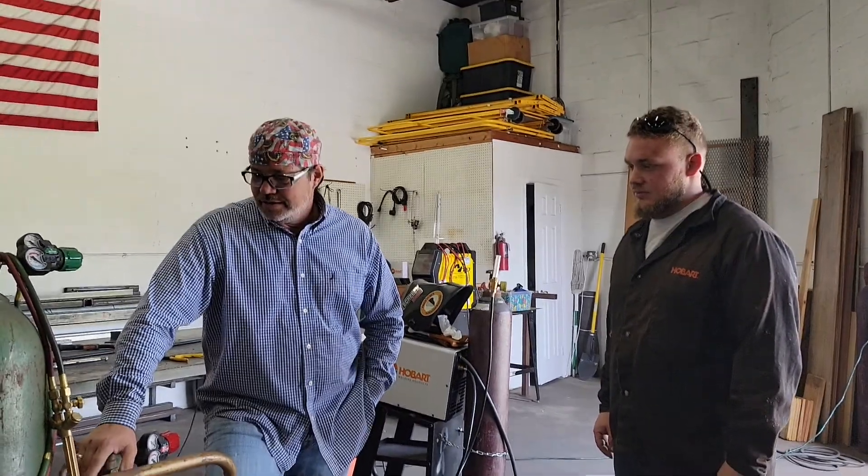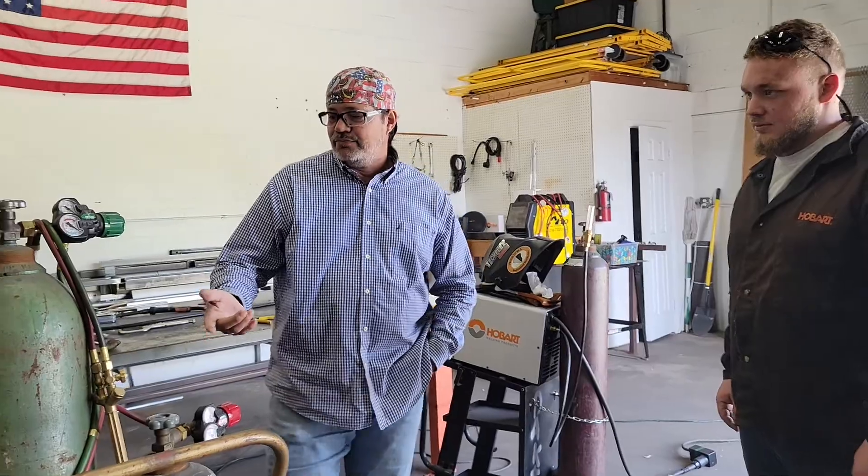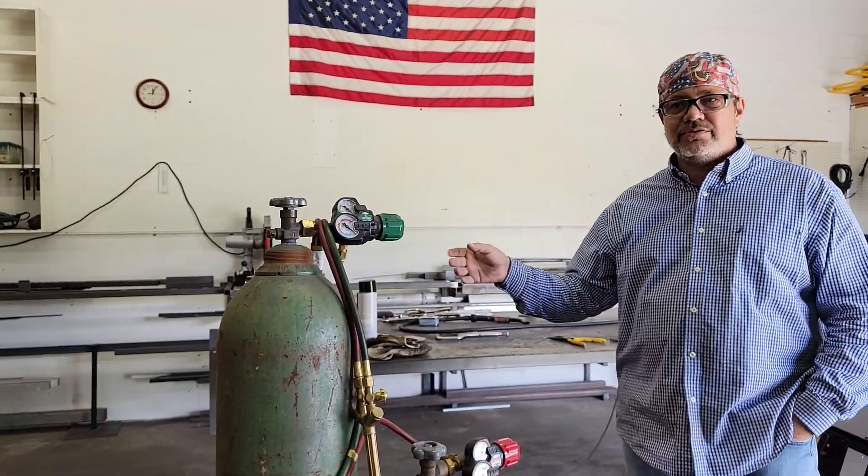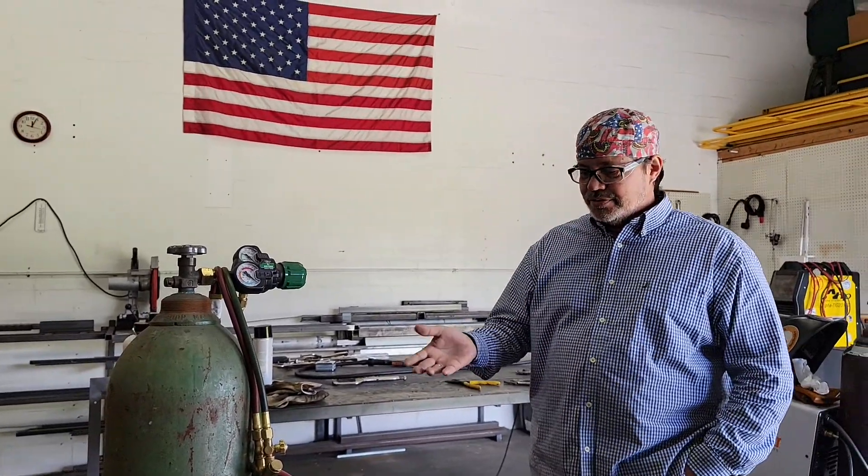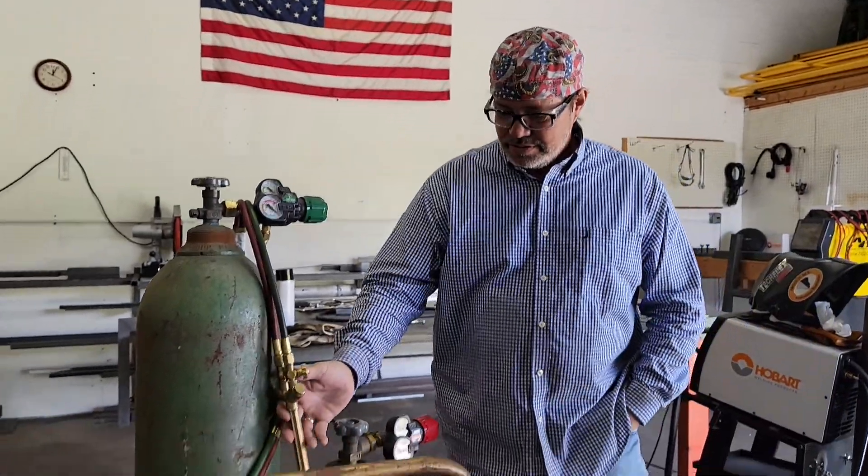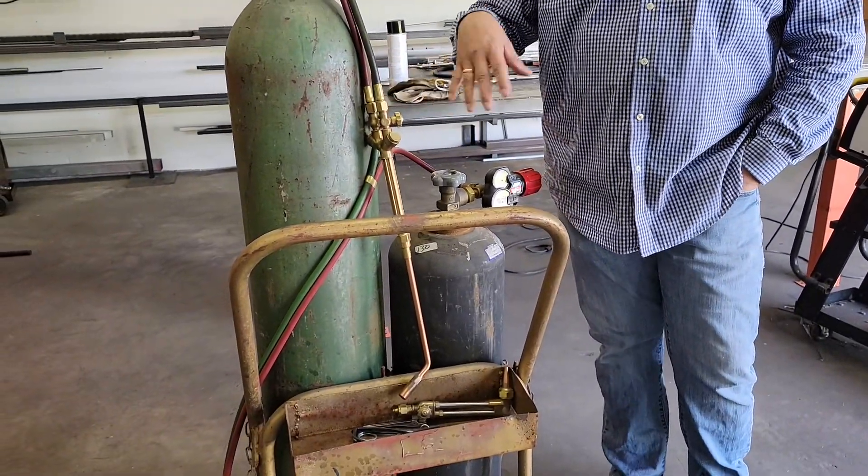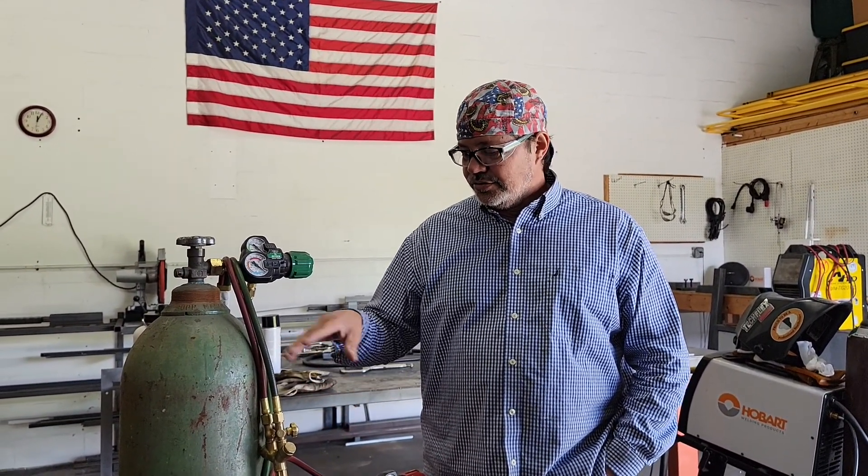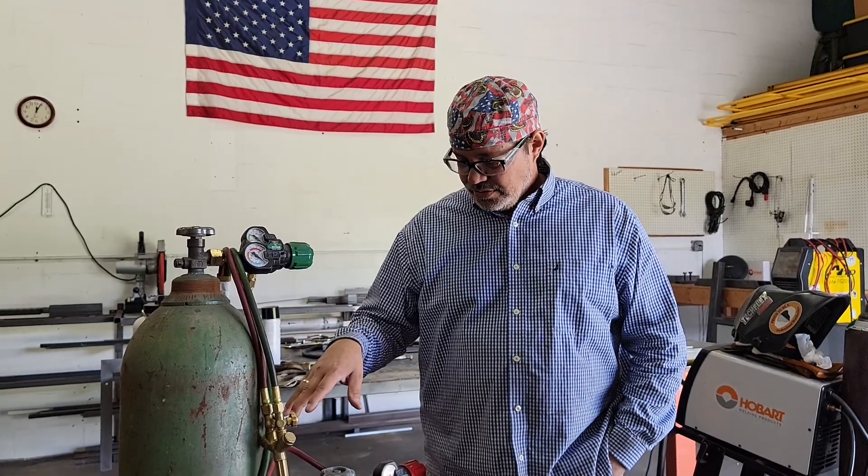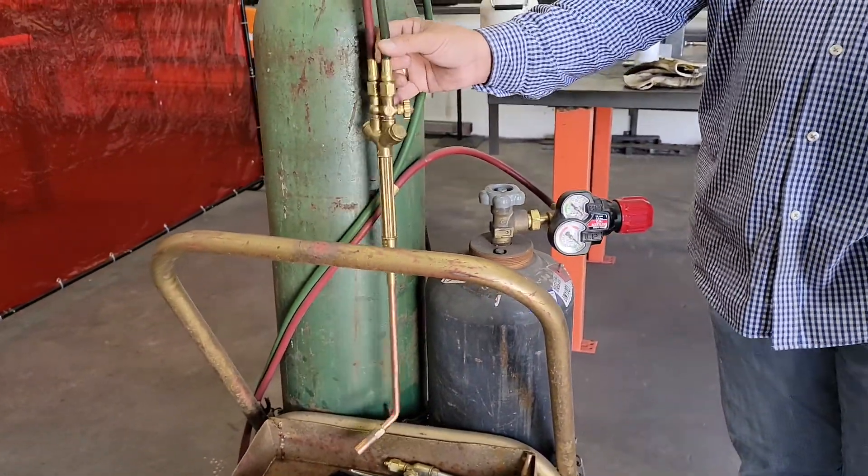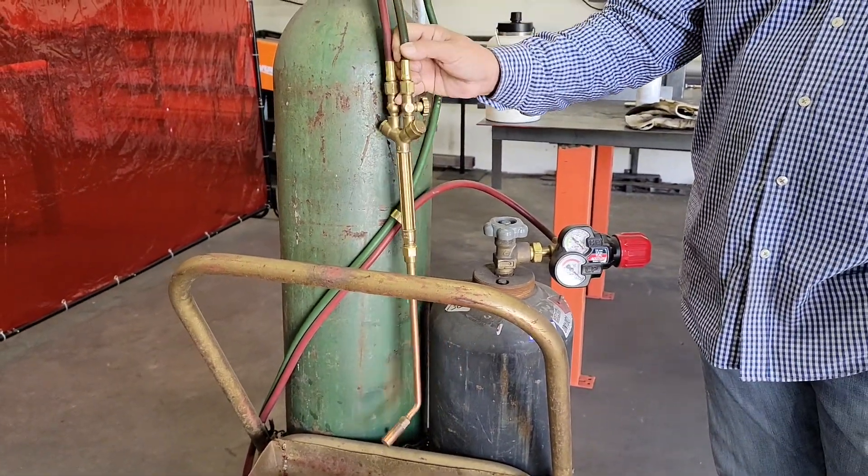So right now today, we're getting ready to forge or get the rosebud and heat some pieces for some ornamental rails we're doing. So we're just putting the cutting torch, setting up the rosebud to burn. So I thought this would be a great opportunity to kind of go over some safety features about the rosebud, cutting torch using these. So we have acetylene, oxygen cutting torch. We've got our rosebud set up here.